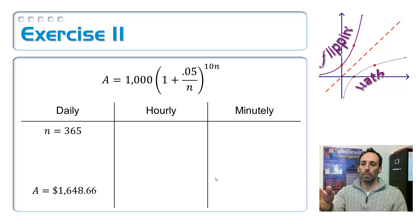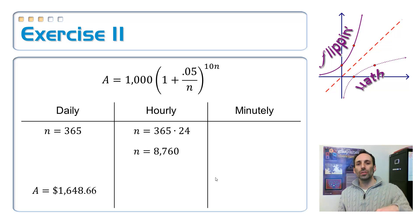Compounded hourly, I got my 365 days, and each one of those has 24 hours in it. So just multiply that out. 365 times 24. It is 8,760 compoundings. That's a lot. So whenever you plug that into the formula, this has got to be, it's got to be like $2,000 or something, right? Let's see, what is it? It's $1,648.72. What? It went up like $0.06. That's it? That's weird.